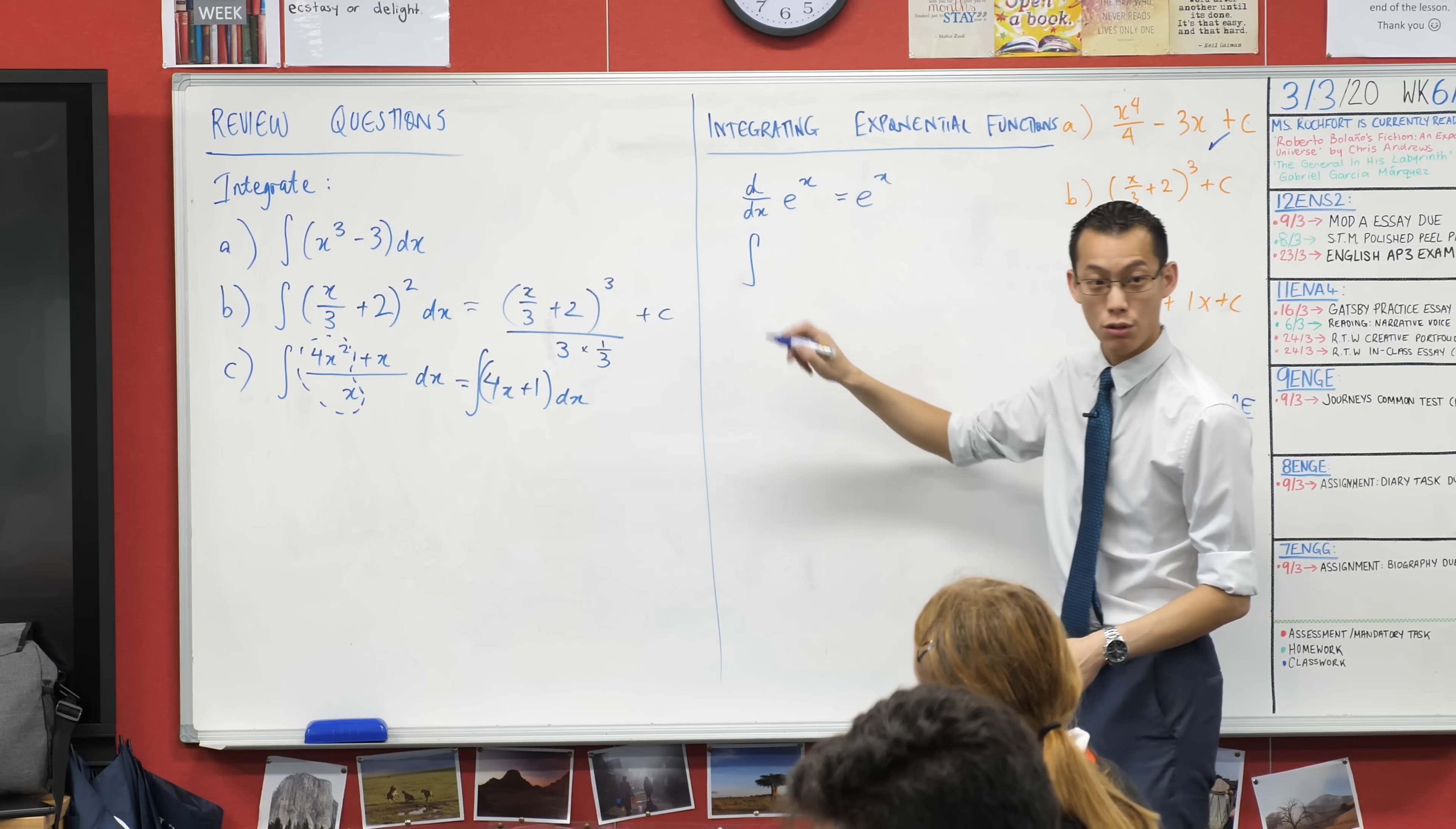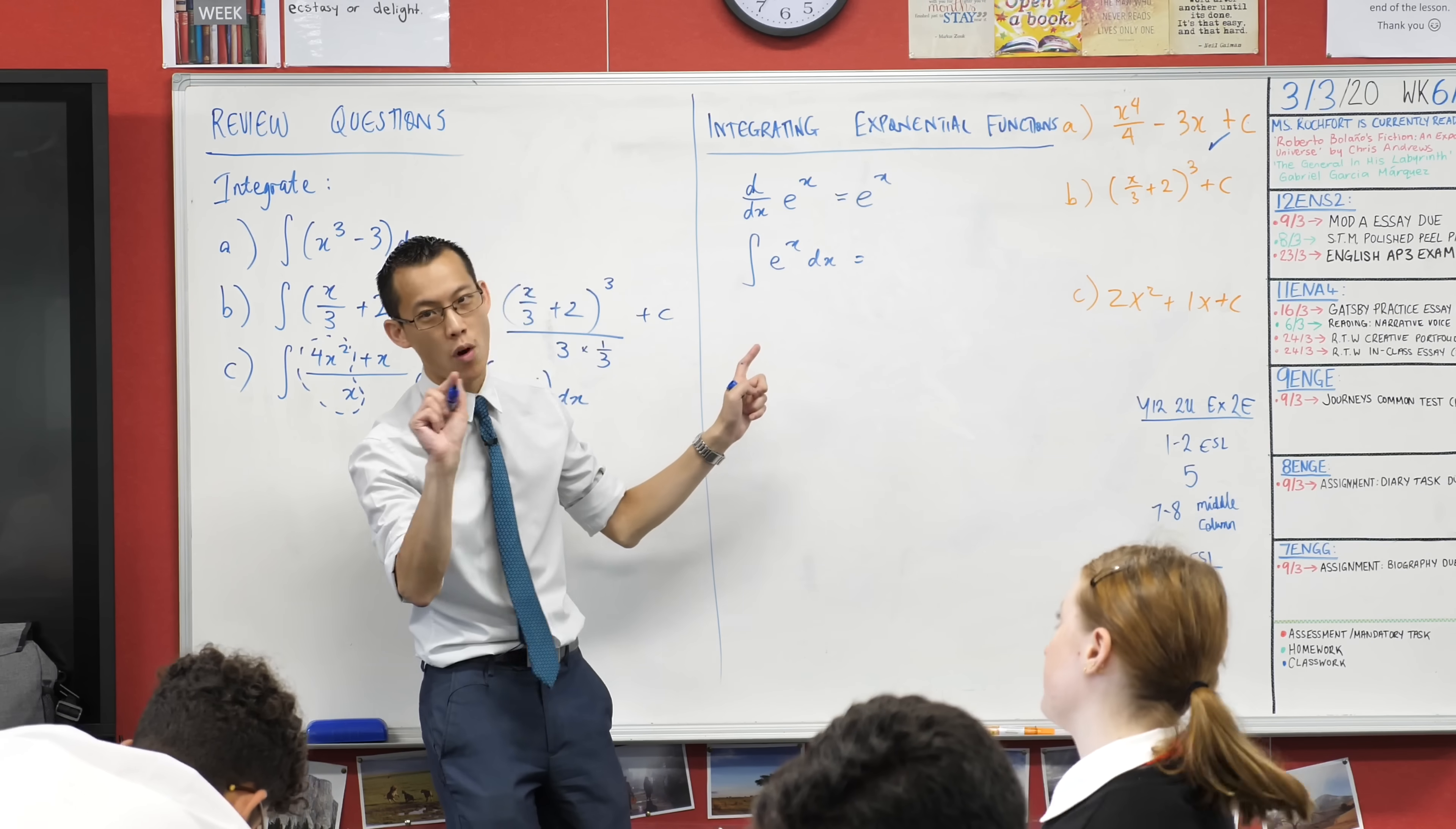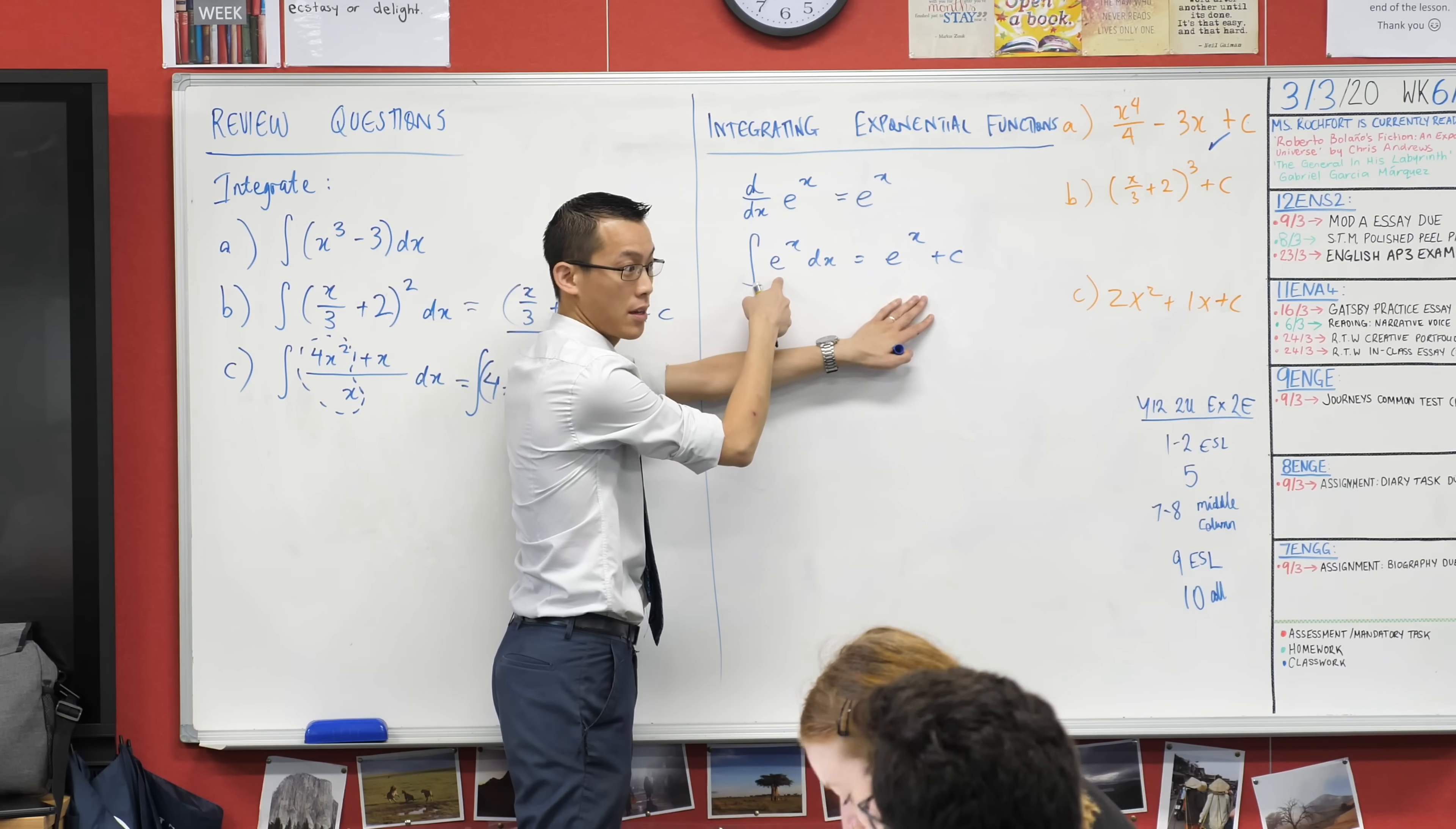What if I asked you to integrate e to the x with respect to x? What would you expect? e to the x plus c. Yeah, you would go back where you came from with one subtle difference, which is that constant of integration, because e to the x plus 1, e to the x minus 500, they would all still differentiate and land us here.